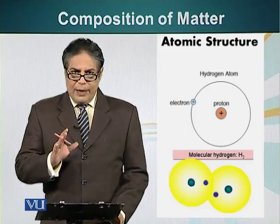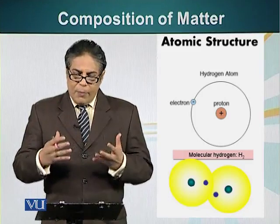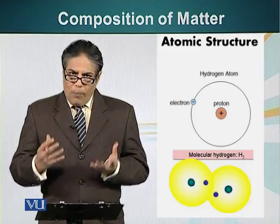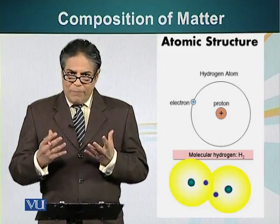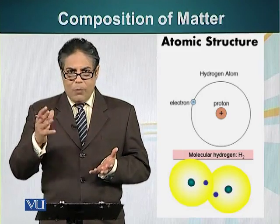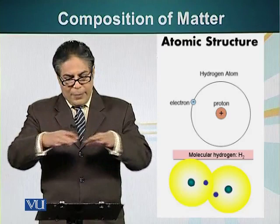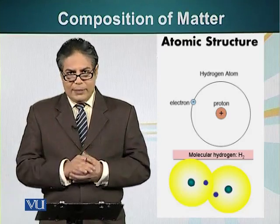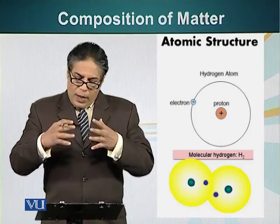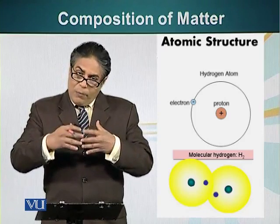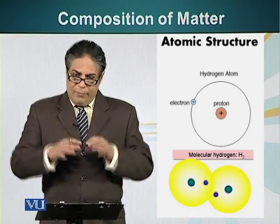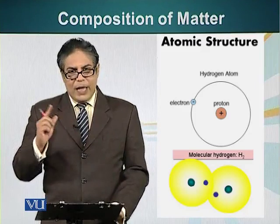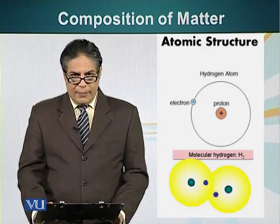Let's look at the analogy of a fan. Think about a fan with a single blade. If we try to operate a fan with a single blade, it will wobble because the blades are not balanced. A single blade cannot be balanced. So, if we have two blades on that fan which are balancing each other, the fan will be able to rotate in a stable manner.